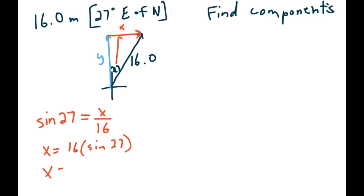From the angle, we have opposite and hypotenuse, so we use sine. Sine 27 equals x over 16. To solve that, go 16 times sine 27 on your calculator. Rounding to 3 sig digs - since the question gave 27.0 - we get 7.26 meters. That was our horizontal component going east.